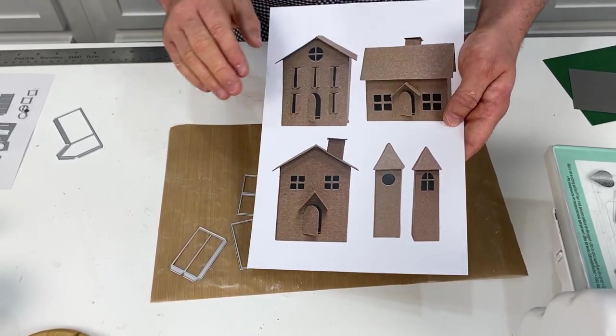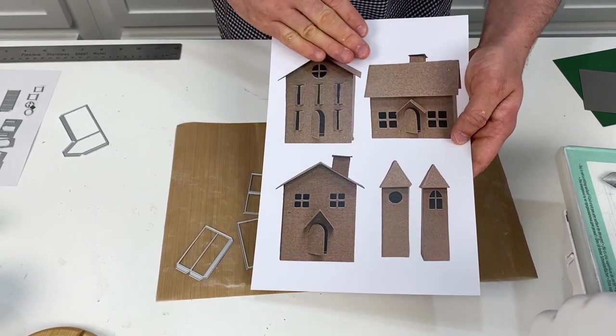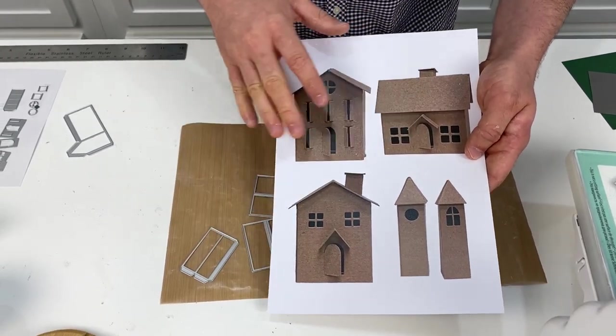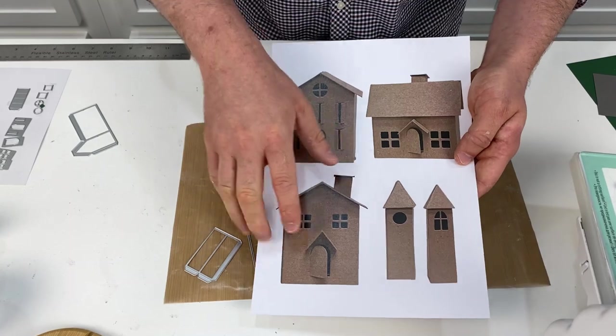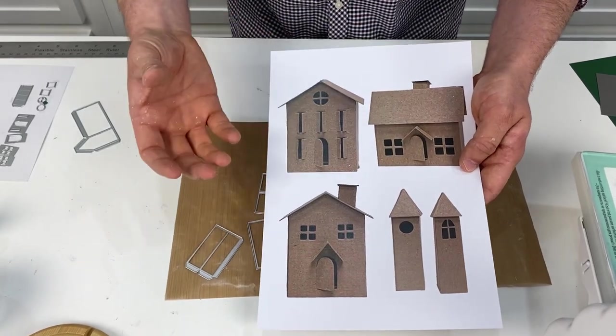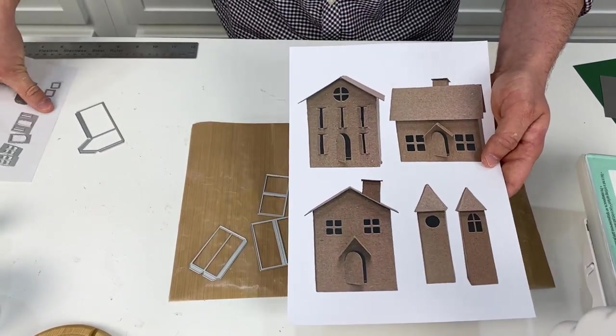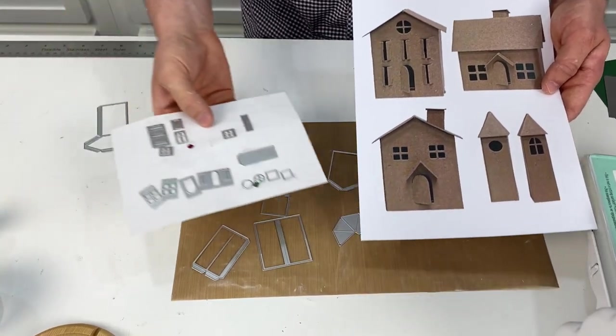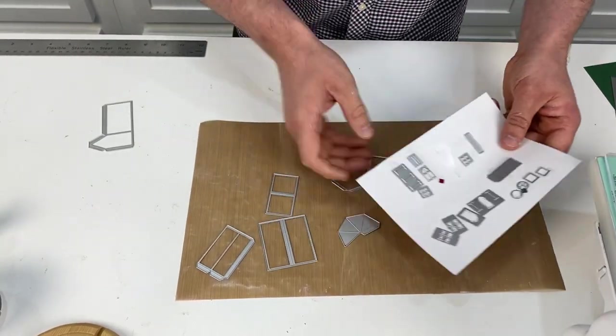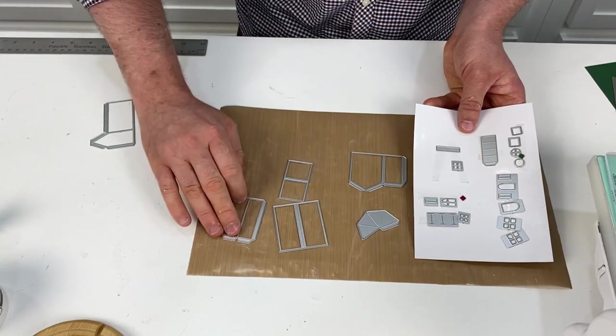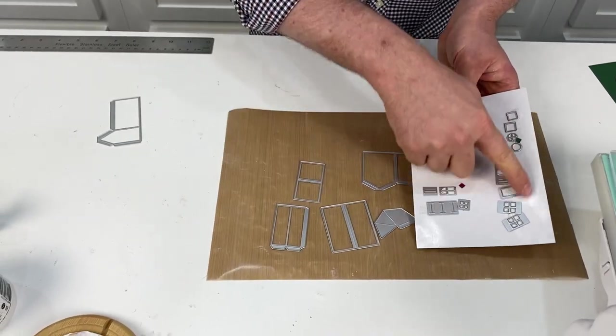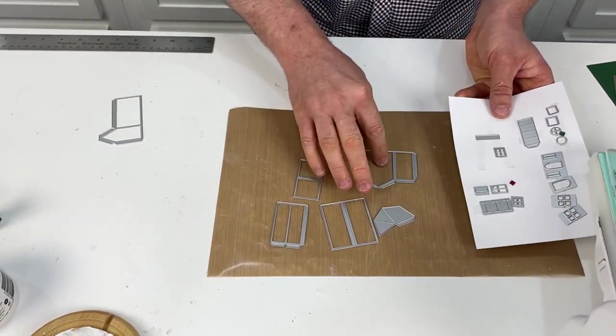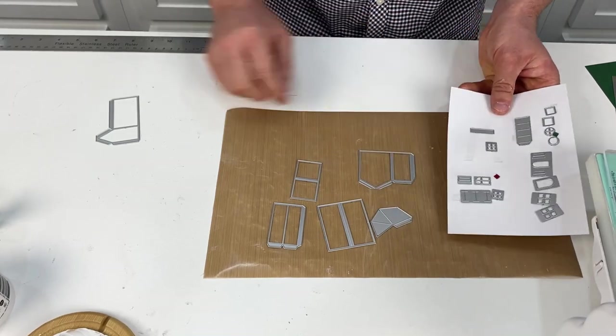And what it does, it folds in on itself and it creates these three dimensional roof elements here for the long tall building. Now this is the building that I'm going to be making today, but I thought it would be a good idea to just show you a lot of the different examples. And these ones here, these are only the ones that we've thought of now.